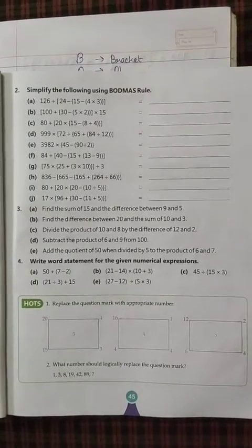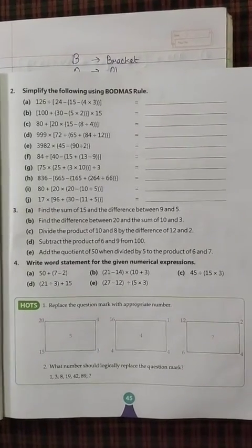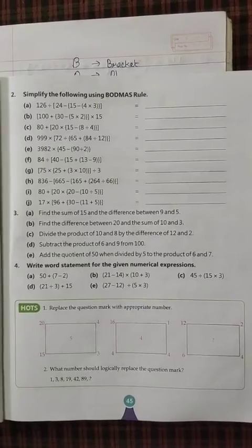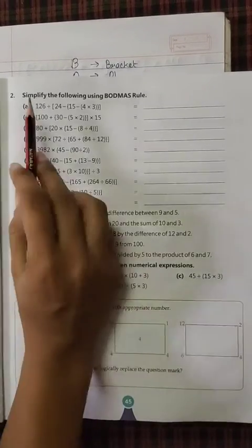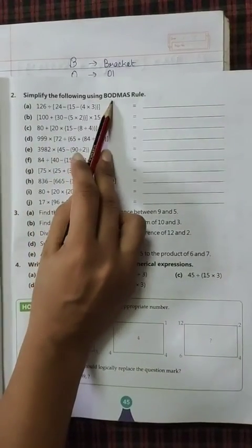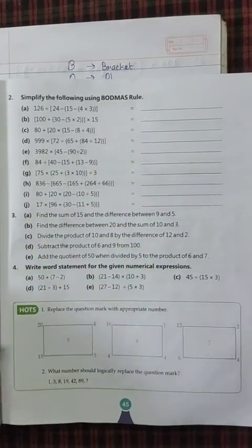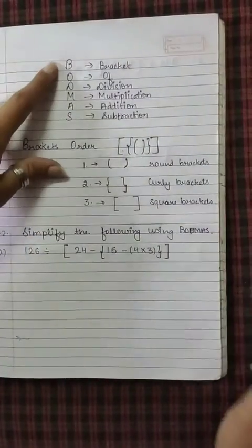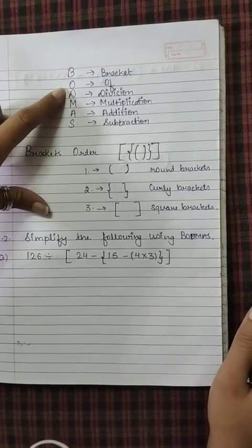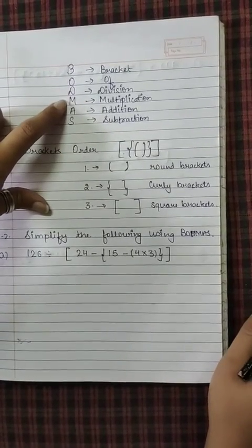Good morning grade 5. As we have done our first question of exercise 3F, today we will start with our second question: simplify the following using BODMAS rule. BODMAS rule you know, BODMAS B for bracket, O for off, D for division, M for multiplication.